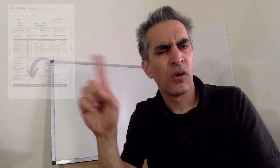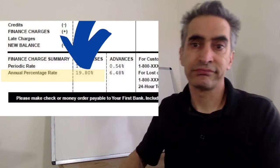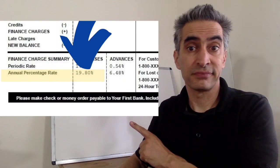The first step is that you must know your APR — that's your annual percentage rate. Where can you find the annual percentage rate? You can find it on your credit card bill.